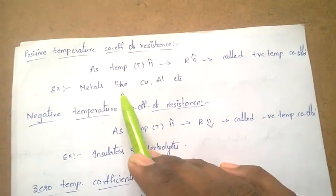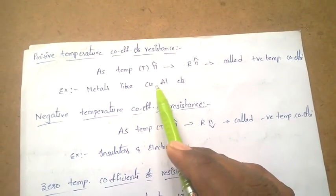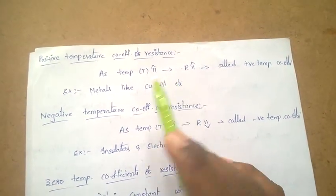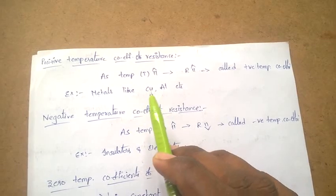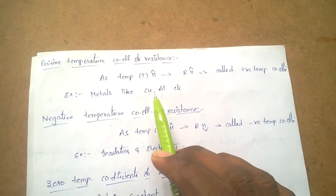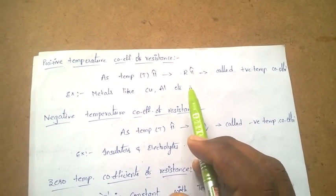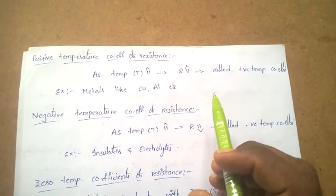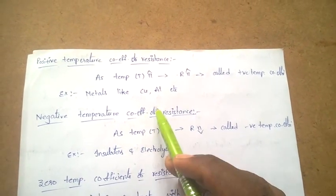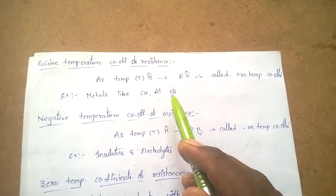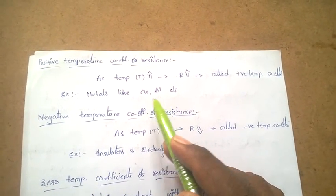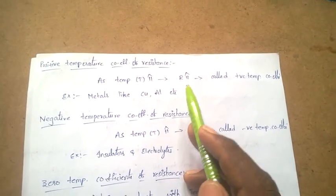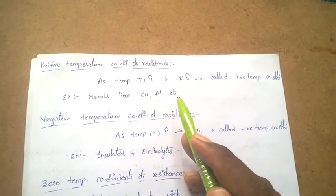Positive temperature coefficient of resistance: as the temperature of the material increases, the resistance also increases. This is called positive temperature coefficient of resistance. For example, metals like copper and aluminum — when the temperature of these materials increases, the resistance also increases. That is why they are called positive temperature coefficients.